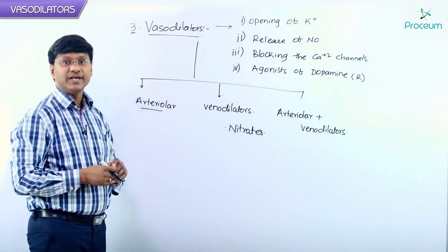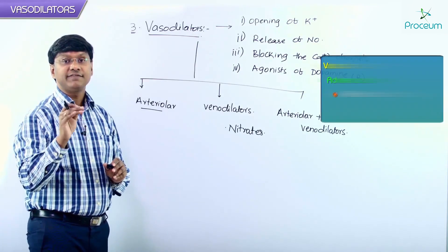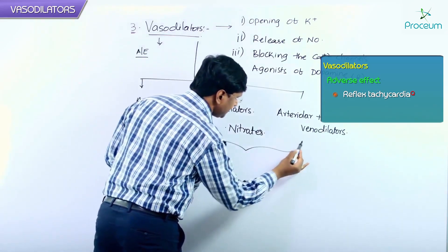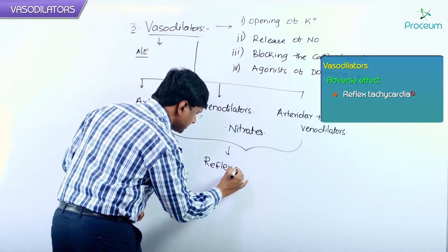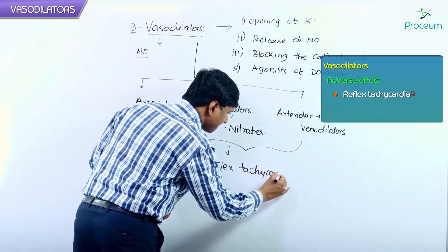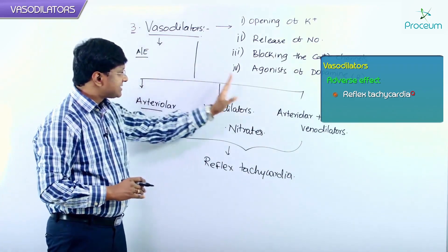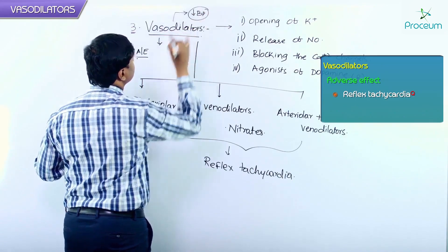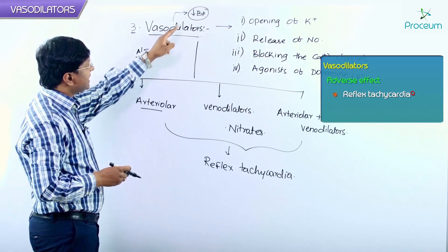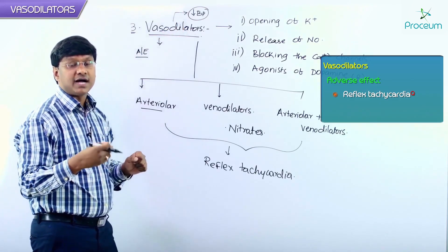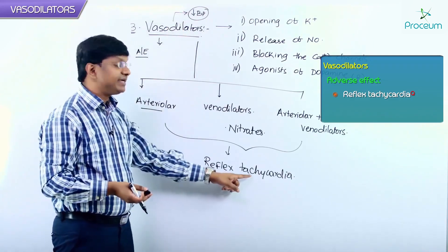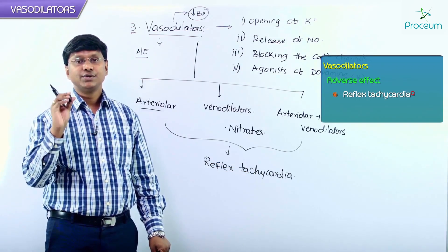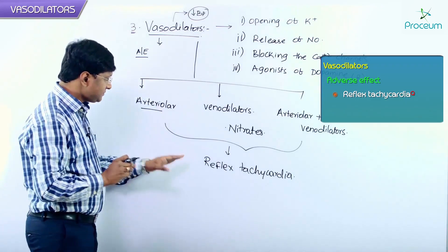All vasodilators can lead to reflex tachycardia, which is an important adverse effect. Vasodilators decrease the blood pressure of the individual, and in response, the heart tries to increase the blood pressure by increasing the heart rate — that is called reflex tachycardia.